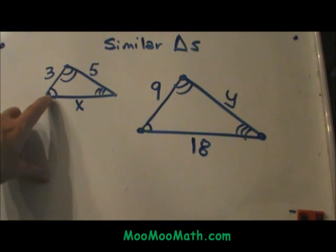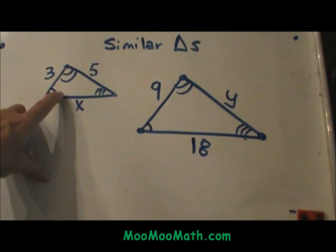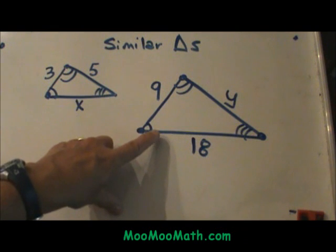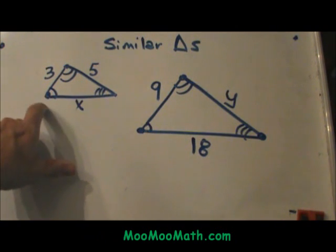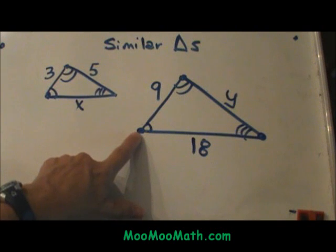It means that they actually have corresponding angles. Notice that this triangle is marked with one arc and this angle down here is also marked with one arc. That means those two angles are congruent to each other.